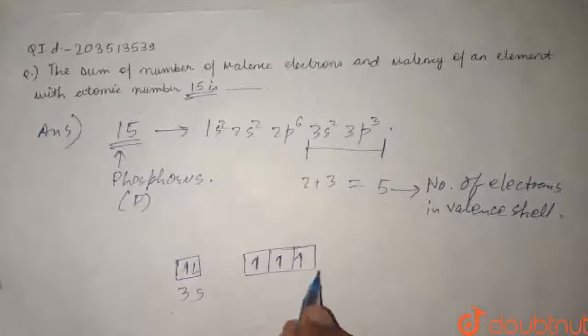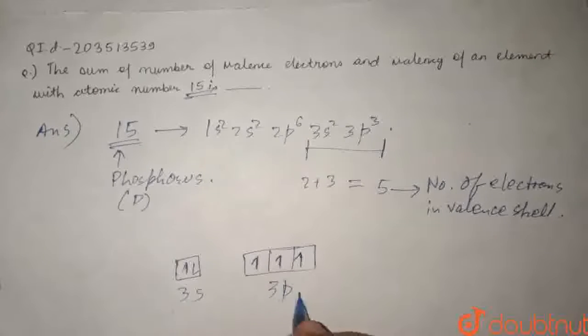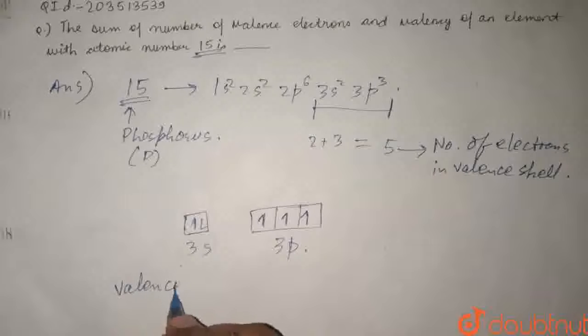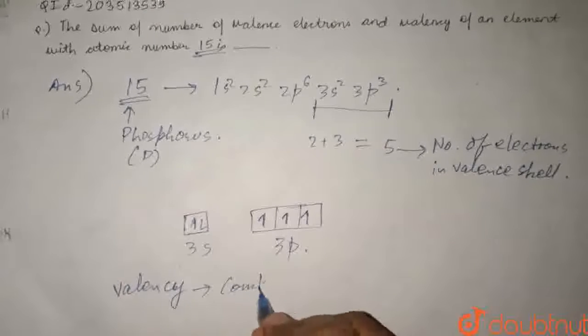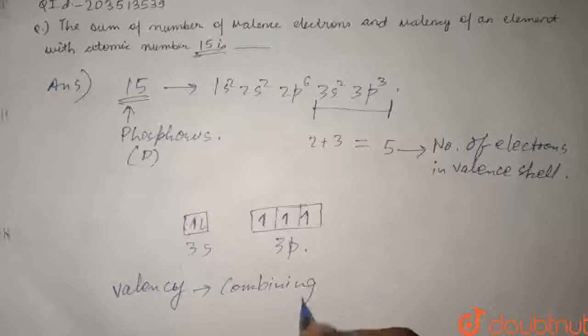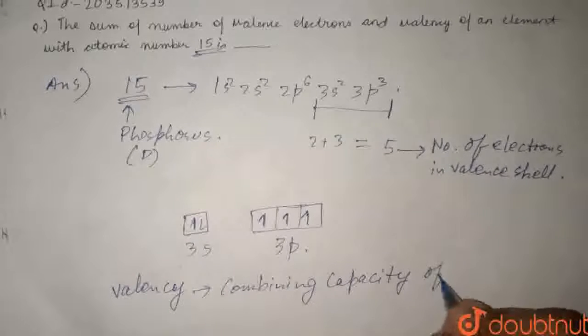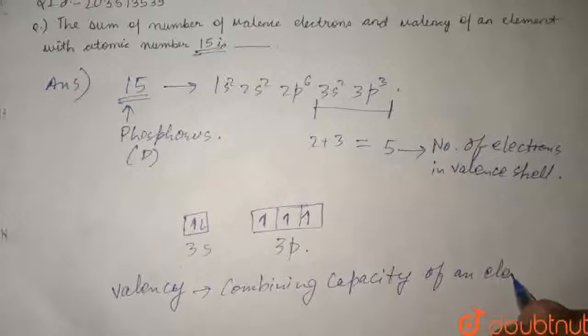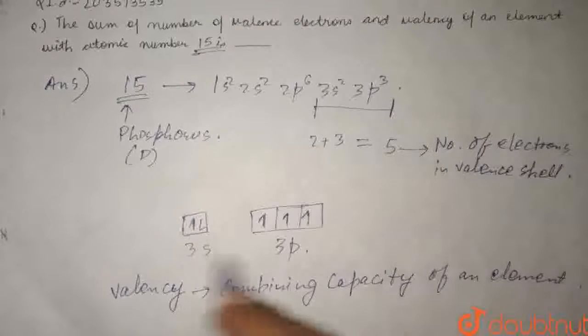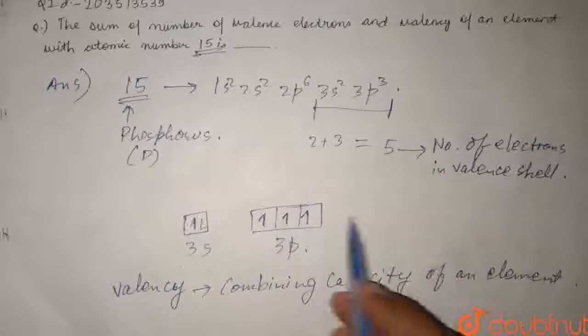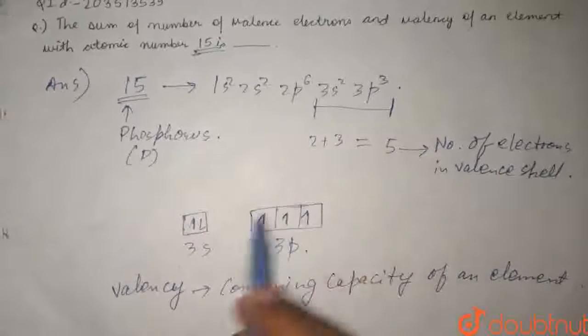Now we are asked about valency. What is valency? Valency is the combining capacity of an element. Here we can see that phosphorus with atomic number 15 has 3 unpaired electrons.